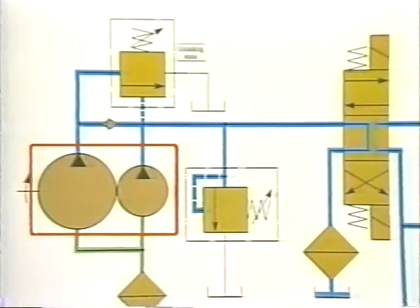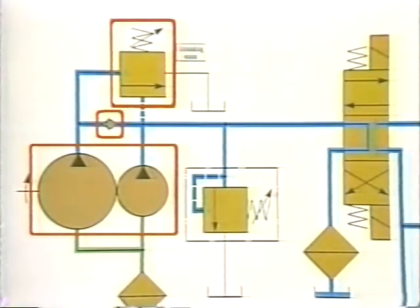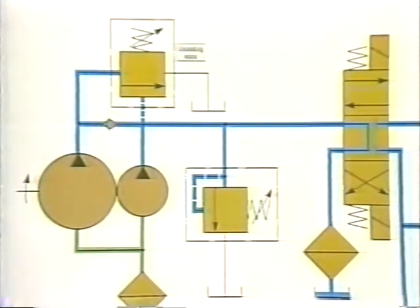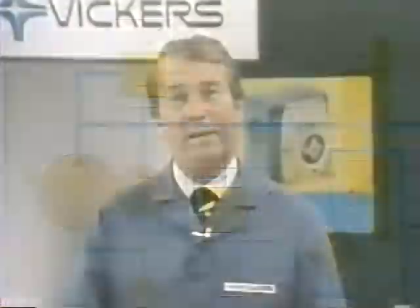To complete our package, we'll need an unloading valve and a check valve. The two pumps piped together will replace the single pump and provide the large volume required at low pressure. When the pressure builds up, as it will when we go into the work portion of the cycle, the unloading valve opens, permitting the large pump flow to return freely to the reservoir. The small pump, however, cannot get through the check valve and continues to operate up to the relief valve setting. As the cylinder returns at low pressure, the unloading valve closes, and the large pump volume again joins the small one for a rapid return.